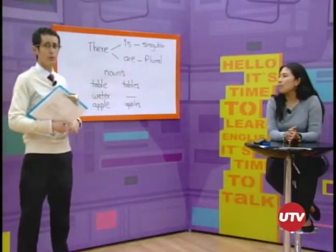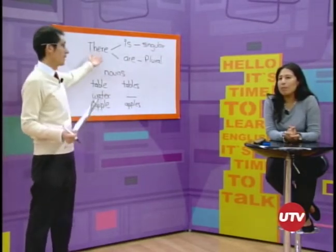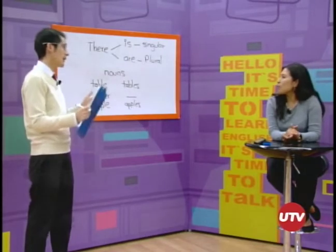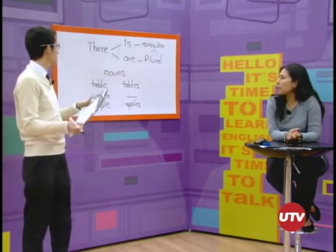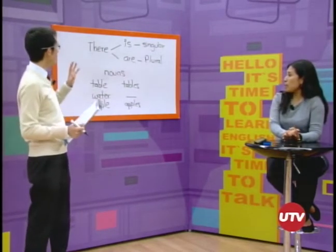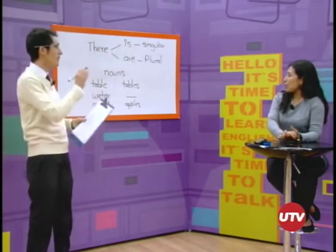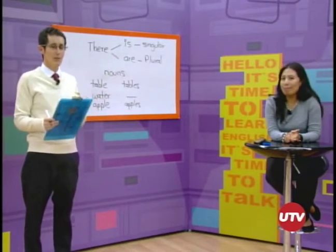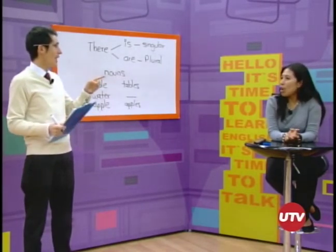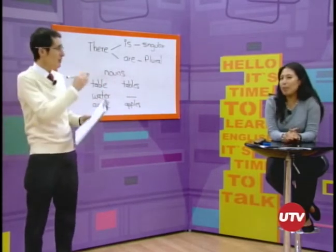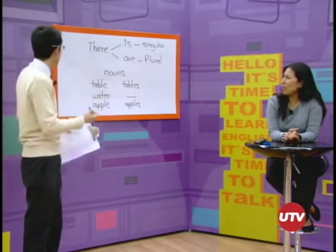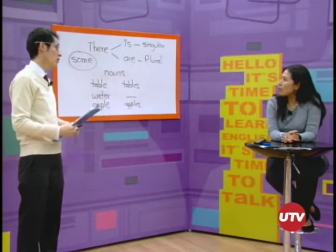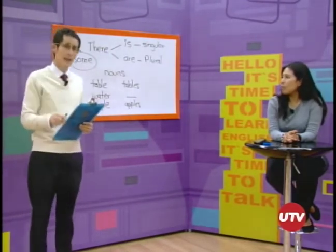Ya tenemos dos conceptos: there is es para singulares, y there are es para plural. Los sustantivos tienen que estar en singular o en plural. ¿Cómo uno todo esto? Me falta un elemento — algo que nos indique la cantidad. Necesitamos unas palabritas que nos ayuden a dar cantidad: se llaman quantifiers, o adverbios de cantidad. Dame un ejemplo — el más utilizado: esta palabrita, "some", que da la casualidad que se puede utilizar para singular o plural. Vamos a ver algunos ejemplos más adelante.